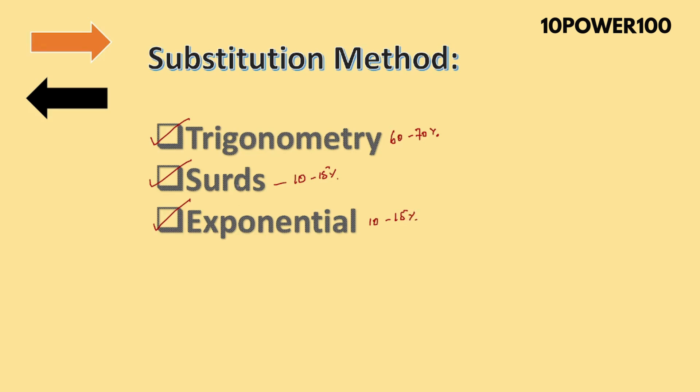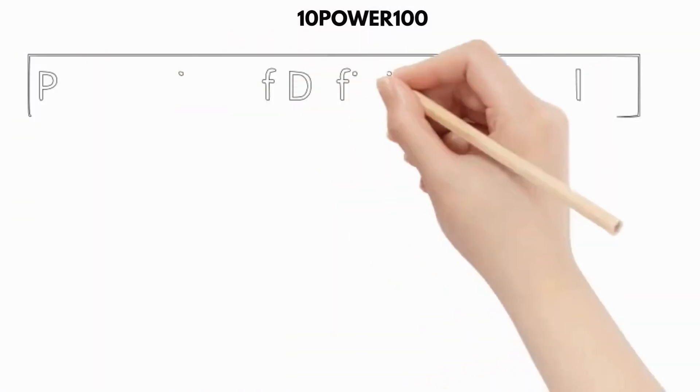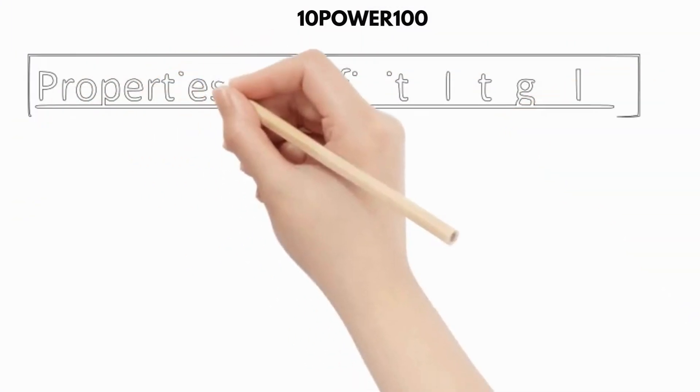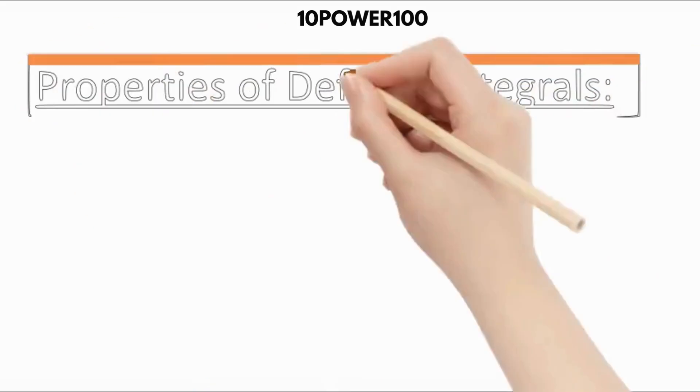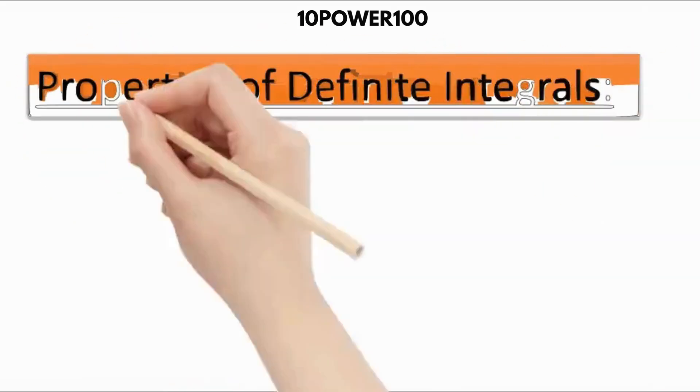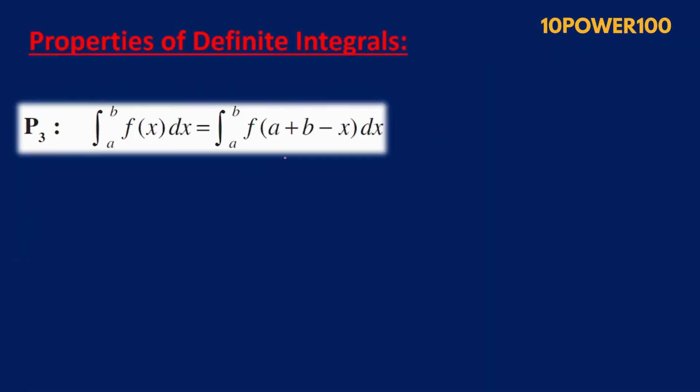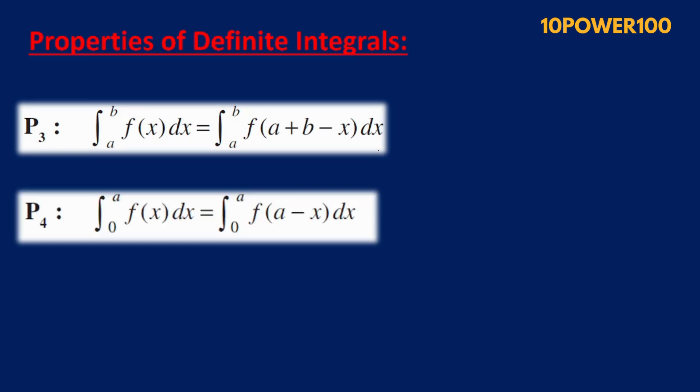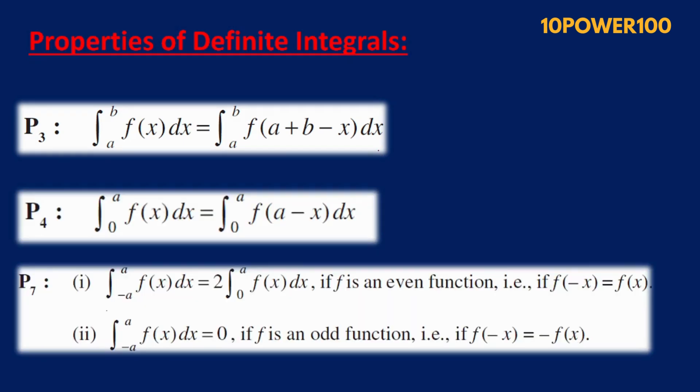Problems based on properties of definite integrals are very important, and most of the problems are based on three formulas: the first one is this, second one is this, and the third one is this. Most of the problems—I would say around 80 to 90 percent—are based on this property.